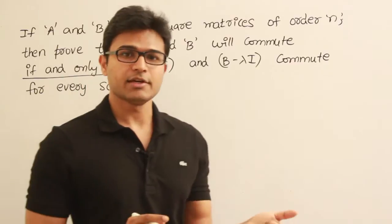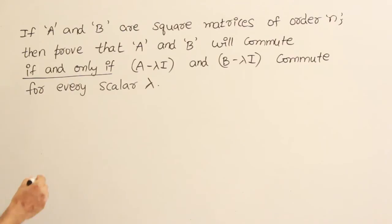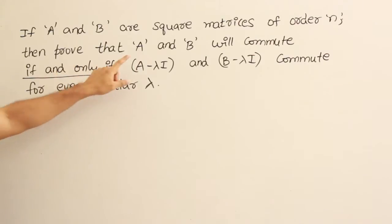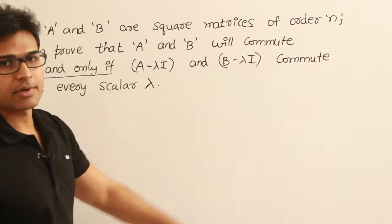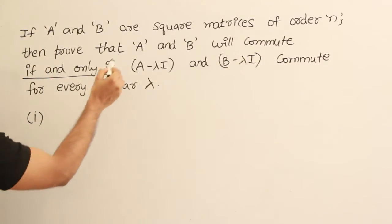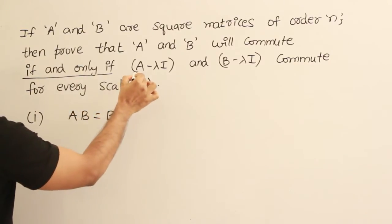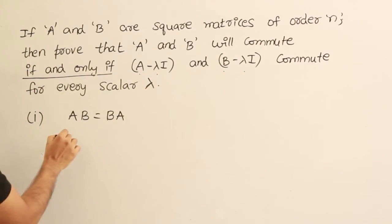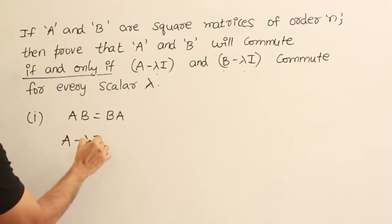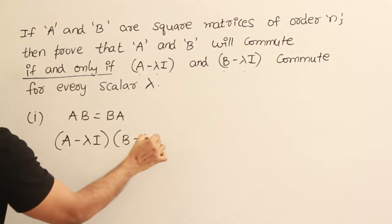We have to prove both the statement as well as the converse. So let's go in steps. The first step is: assuming A and B commute, which means AB equal to BA, I want to prove that A minus lambda I and B minus lambda I also commute. So I will start by computing A minus lambda I multiplied by B minus lambda I and find out what we get.